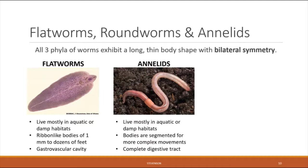Annelids are another type of worm that also live in mostly aquatic or damp habitats, but their bodies are recognizable because they are segmented, allowing them to execute more complex movements in multiple directions. The typical earthworm is a great example of an annelid — you can clearly see the segmentation along its body. Annelids also have a complete digestive tract, with a mouth at one end, an anus at the other, and everything in between to digest food.